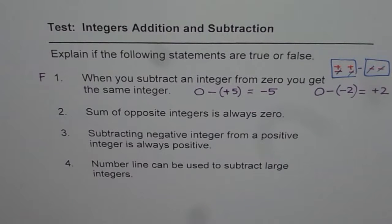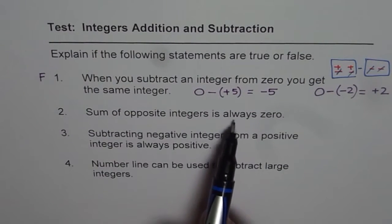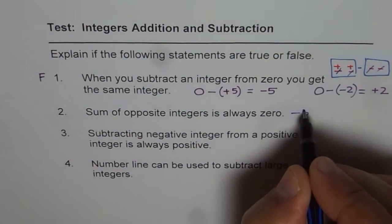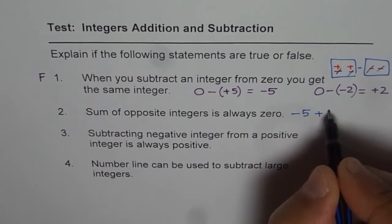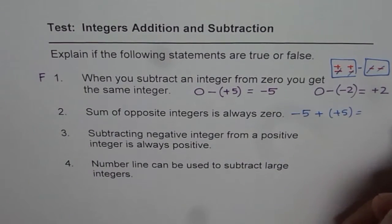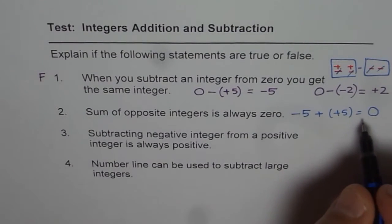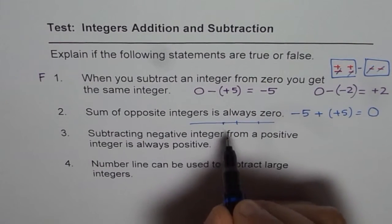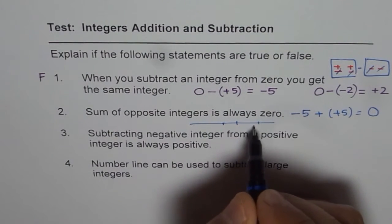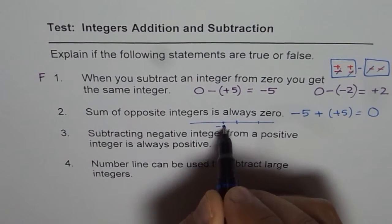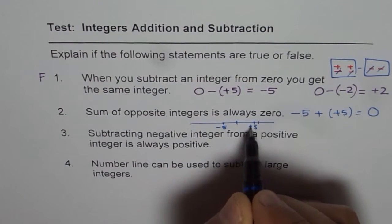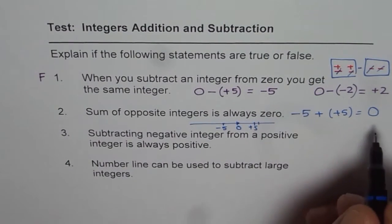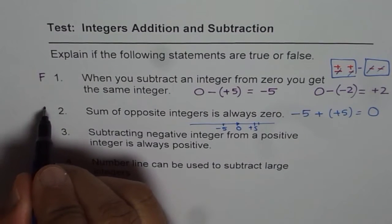Let's answer the next one. Sum of opposite integers is always 0. That is to say, if I add minus 5 to plus 5, what do I get? Well, I do get 0. The opposite integers are on a number line, right on the opposite sides. So, they are same distance away. So, let us say this is minus 5 for us. And here we have plus 5. They are same distance away from 0. If you add them, you do get 0. So, that statement is true.